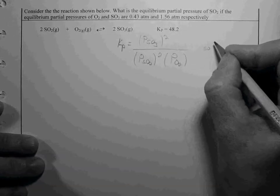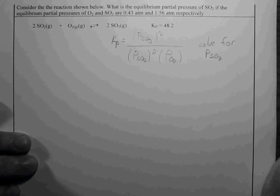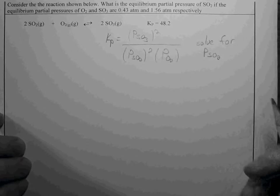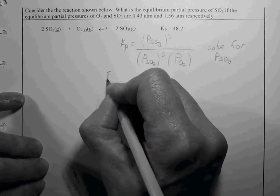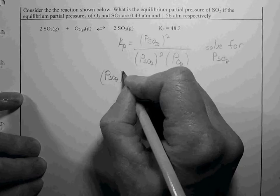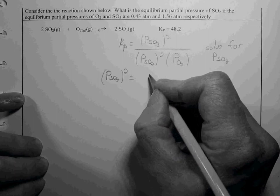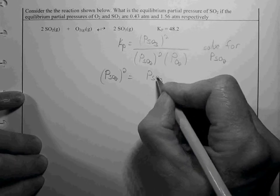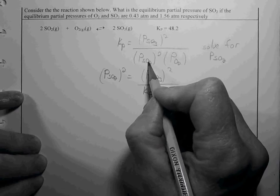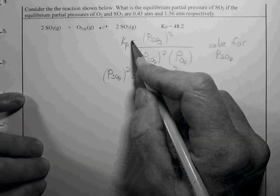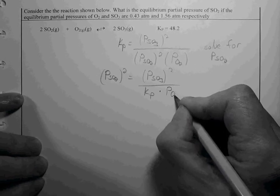I'm going to solve for the partial pressure of SO2. We rearrange so that the pressure of SO2 squared equals the pressure of SO3 squared divided by Kp times the partial pressure of O2.